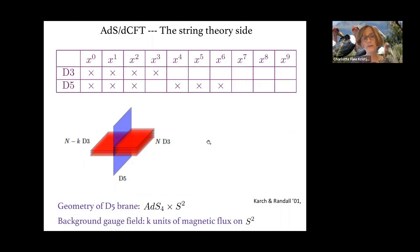From the string theory side, we have a 10-dimensional background with N D3-branes which generate the gauge theory. In this background, I place a single probe D5-brane, which shares three dimensions with the D3-branes. These three dimensions constitute the co-dimension 1 defect or domain wall.